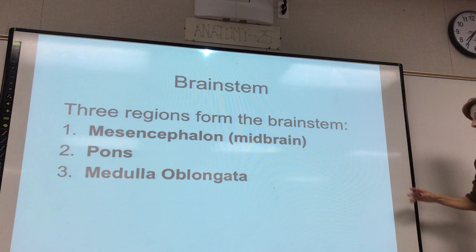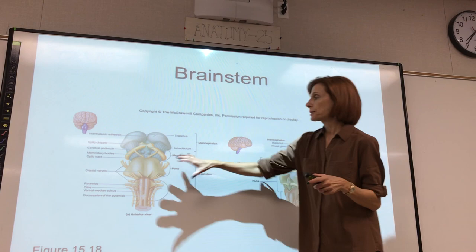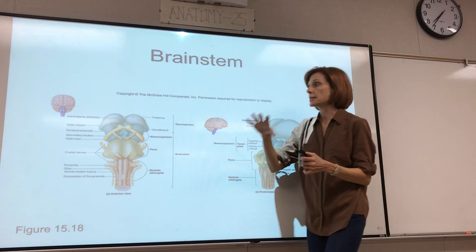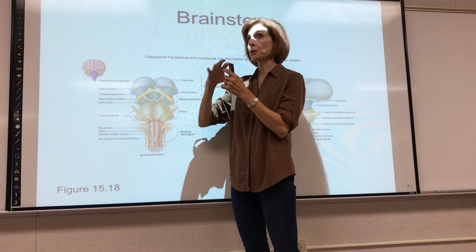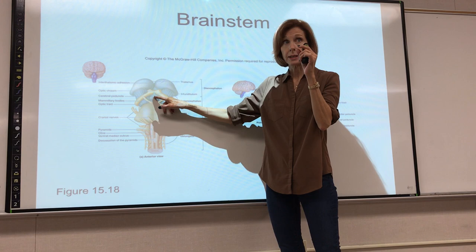This diagram shows an anterior view and a posterolateral view of the brainstem, but notice they included the diencephalon on top. Just so you're oriented, this is the thalamus — it's actually on top of the brainstem, up in the diencephalon.